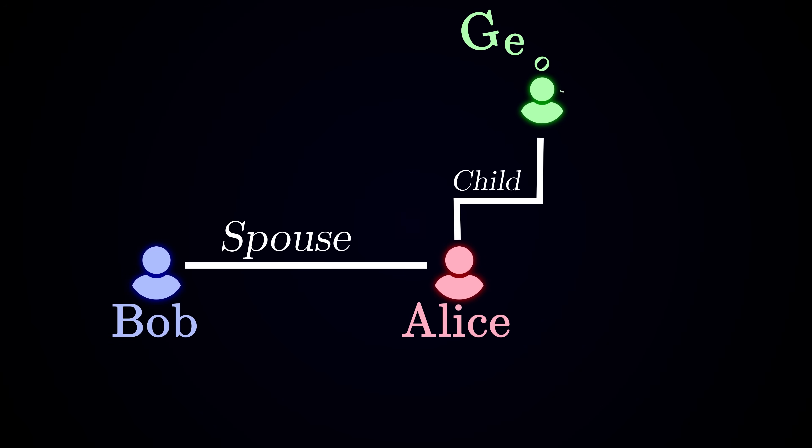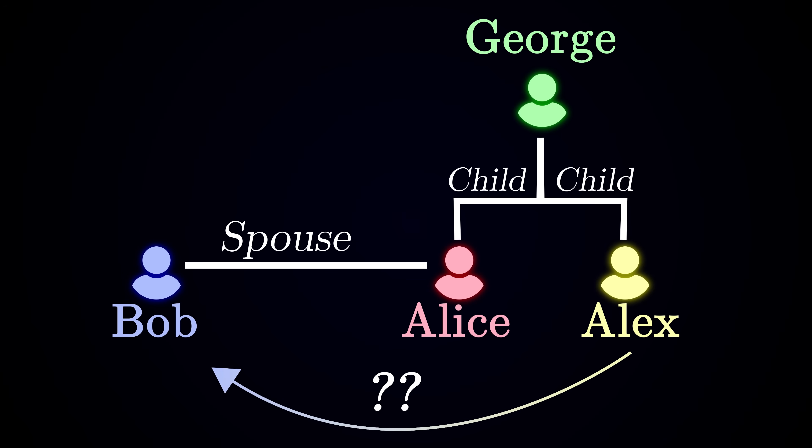Let's see if you can solve the following riddle. Bob is married to Alice, who is George's daughter. Alex is George's son. How is Alex related to Bob?